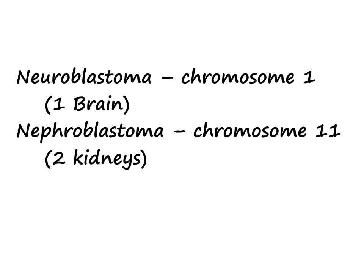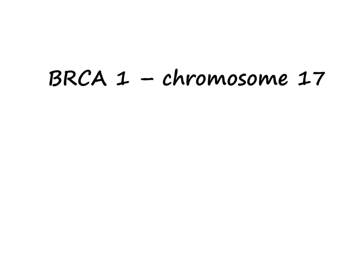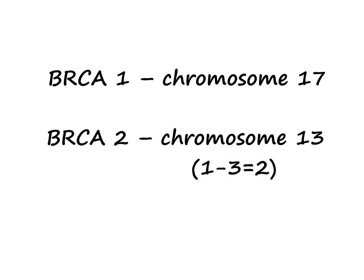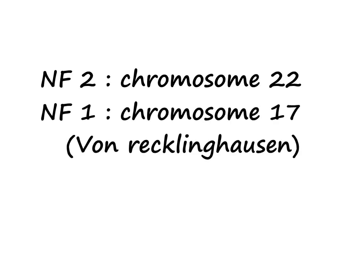The next group is BRCA1 and BRCA2. You have to remember chromosomes 17 and 13. BRCA2 is chromosome 13 because 1 minus 3 equals 2. If BRCA2 is chromosome 13, then BRCA1 should obviously be chromosome 17.